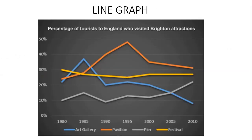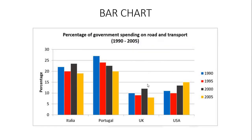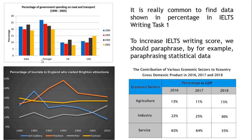The first example is the line graph, where as you can see the data are shown in percentage. The title explains: percentage of tourists to England who visited Bratton attractions, and the data are shown in percentage. The next example is a table, where normally you find the data shown in percentage as well. The same thing for bar chart. So it is really common to find data shown in percentage in IELTS Writing Task 1, and to increase our IELTS Writing Score, we should paraphrase by, for example, paraphrasing statistical data.